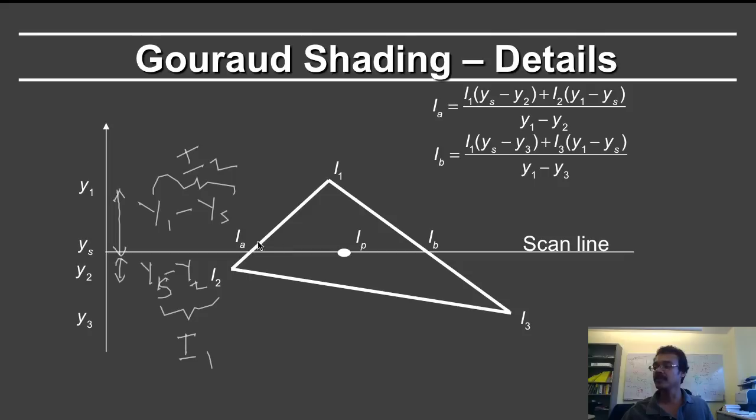Once you have the formula for iA and iB, the question is what do you get for iP? And in order to consider that, one needs to consider the x coordinates, because one is interpolating within a scanline. So we can consider this as being the x of A, and we can consider this as being x of B. Here of course you have x of P.